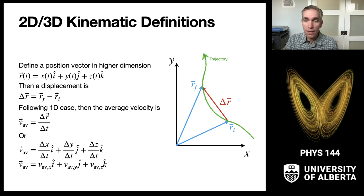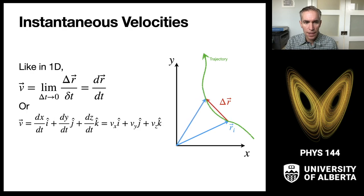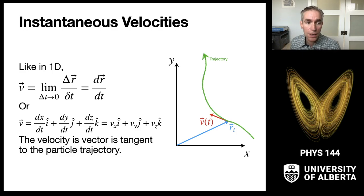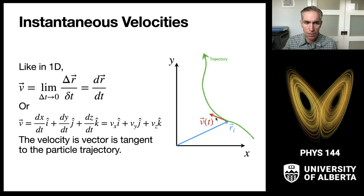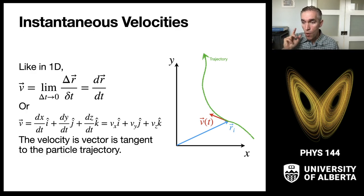Then we consider the limit as the time interval goes to zero to get the instantaneous velocity. Graphically, the final position gets closer and closer to the initial position, and we come up with a velocity vector in the limit that is tangent to the particle trajectory. The velocity vector is just the component-wise time derivatives of the x, y, and z components, and they operate independently. So a 3D problem is just three one-dimensional problems.